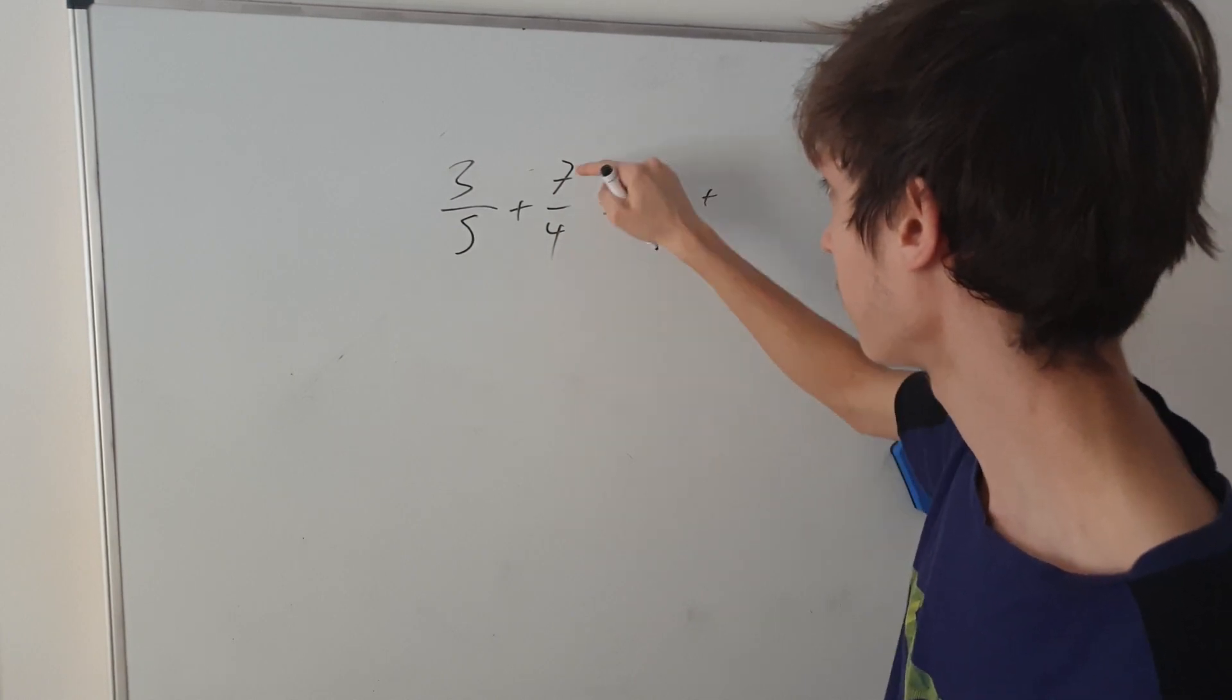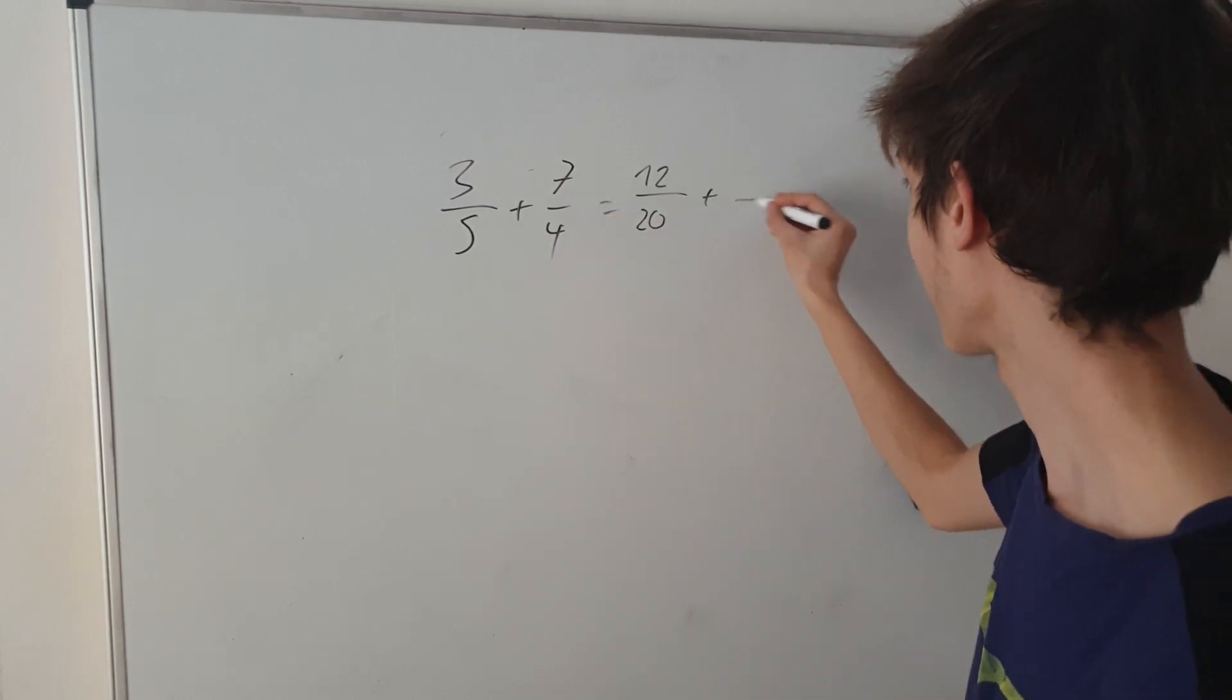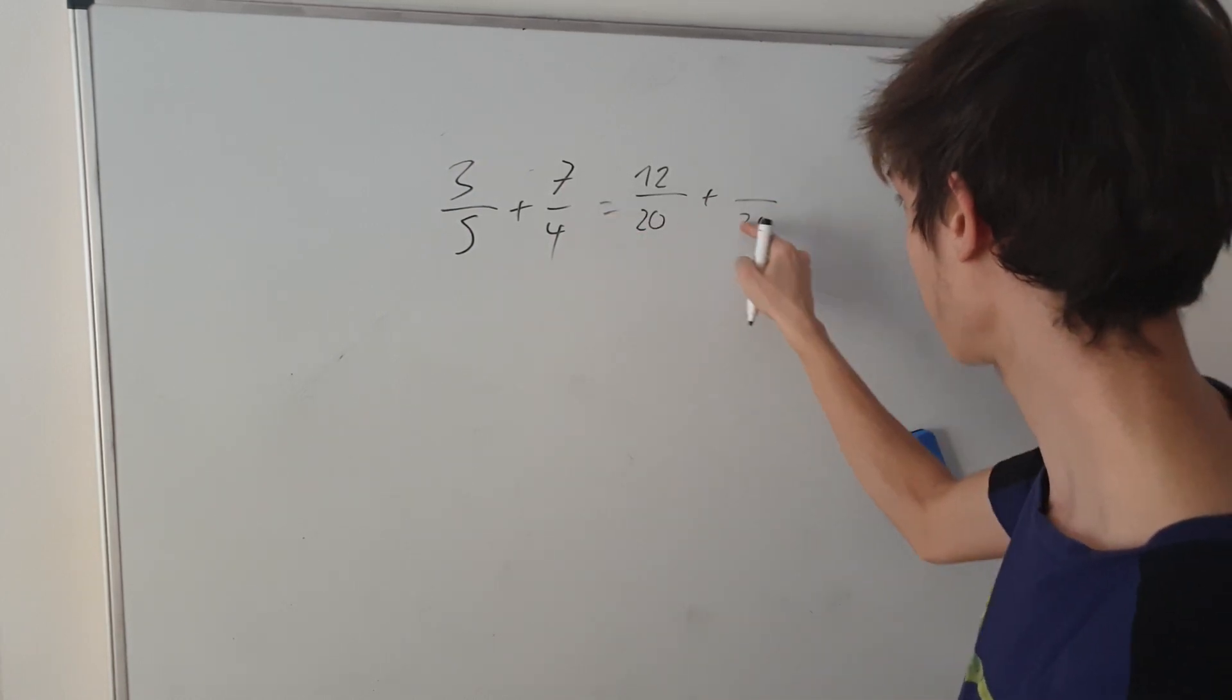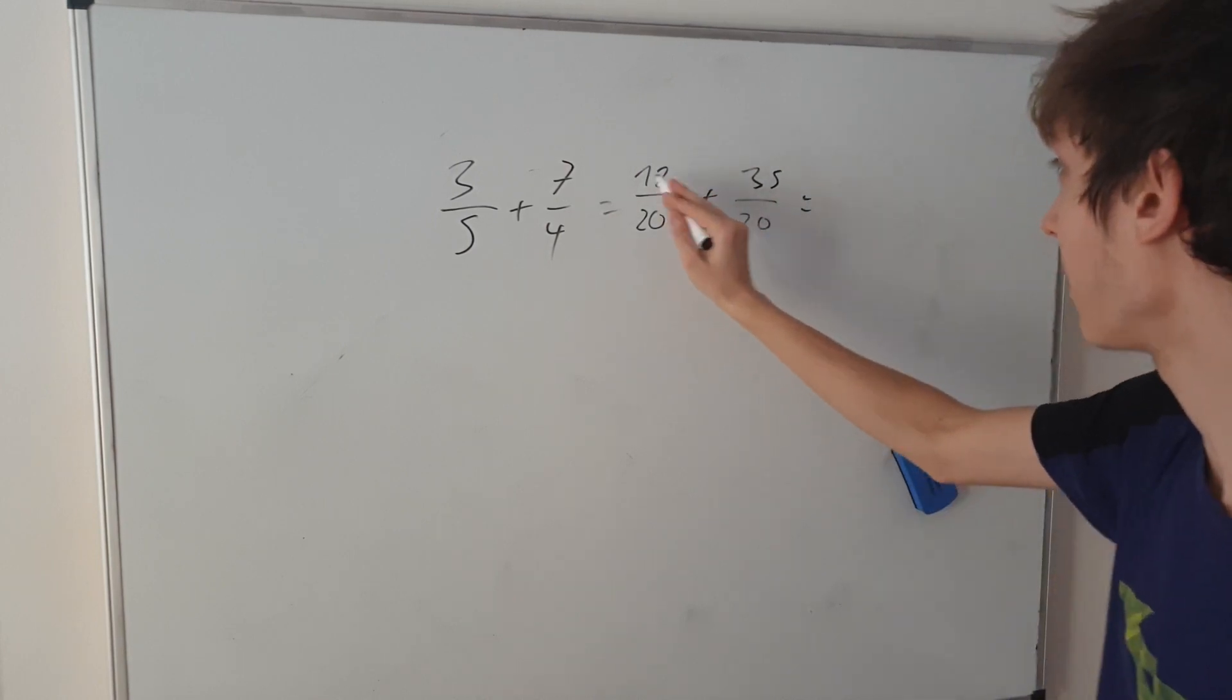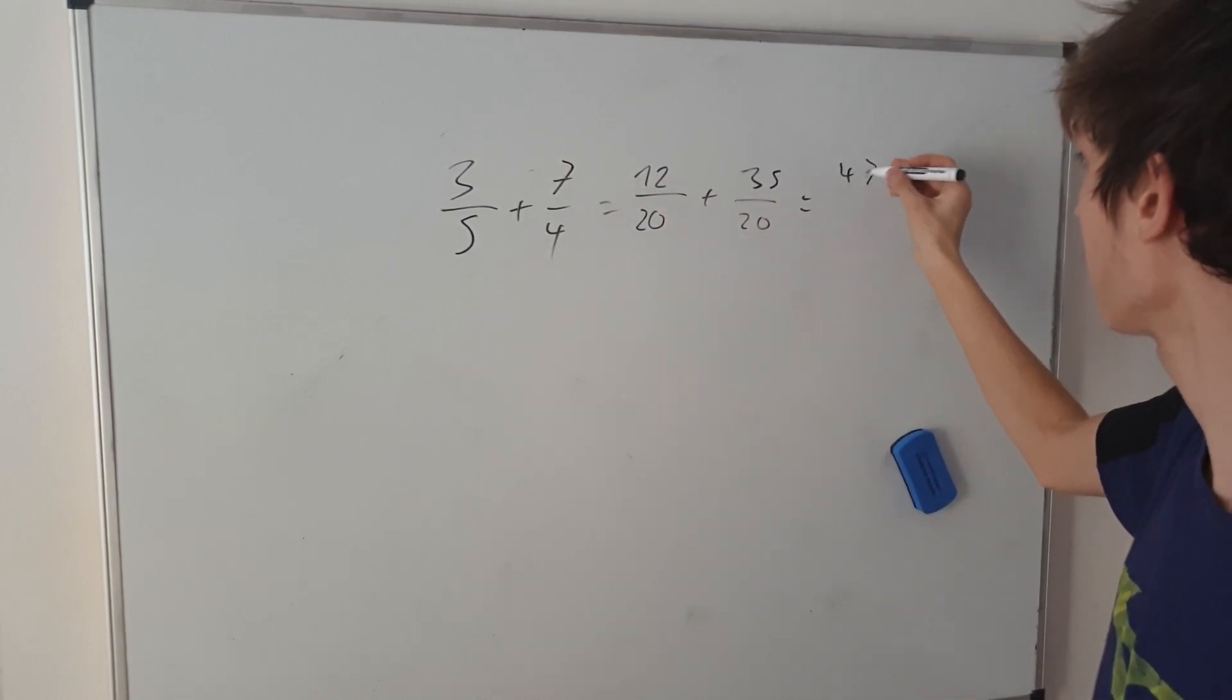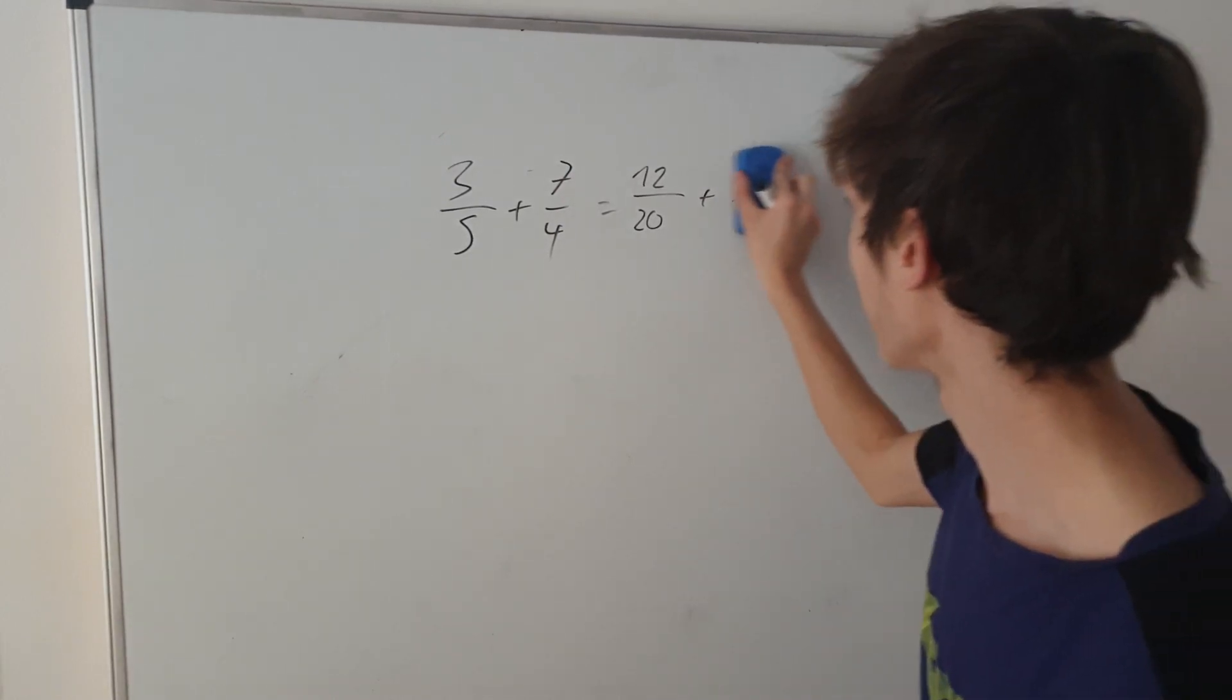So, 12 over 20. And then we have to multiply this one, both the bottom and the lower number by 5 to get 20. In the bottom again, we have to have the same number. And then 35. So, we get added together, 47 over 20. Okay? So, that's it.